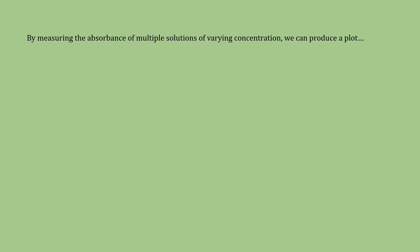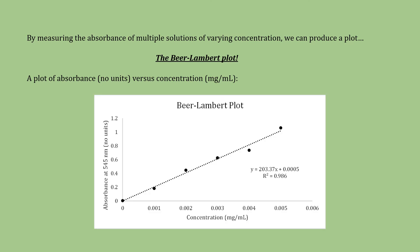Now, by measuring the absorbance of various solutions of different concentration, such as the solutions in the previous screen, we can produce a plot. That plot is referred to as a Beer-Lambert plot. Italicized, bold, and underlined for emphasis. A Beer-Lambert plot is a plot of absorbance, which again has no units, versus concentration, which for this experiment will have units of milligram per milliliter. There you go. This is an example of a Beer-Lambert plot. Notice the general linear nature of the data points. Also notice that we have absorbance on the y-axis, concentration on the x, because again, it's absorbance versus concentration, y versus x.